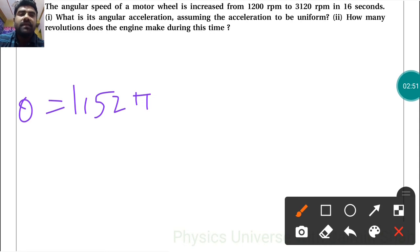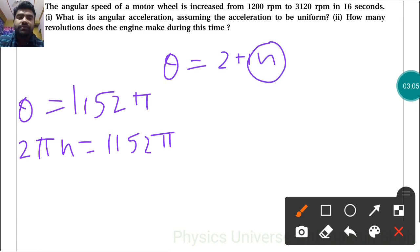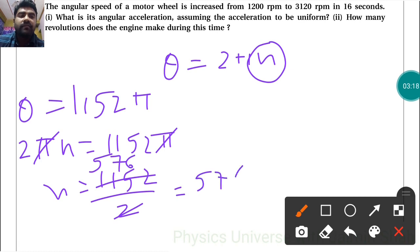Now for revolutions, the number of revolutions: 2πn = θ = 1152π. Because theta is 2πn, where n is the number of revolutions. So n = 1152/2 = 576 revolutions.